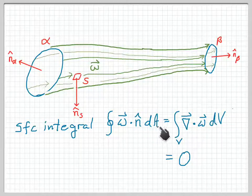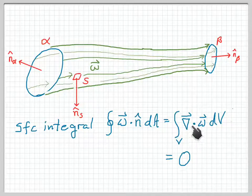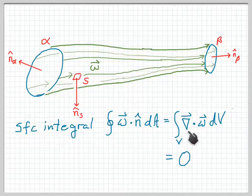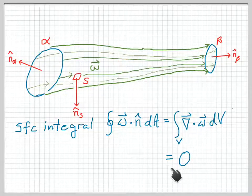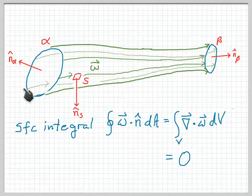By the divergence theorem, we can convert this closed surface integral into a volume integral over the whole volume of the vortex tube of the divergence of the vorticity. The divergence of the vorticity is identically zero, and therefore this integral has to be zero. So when we integrate the normal component of vorticity over the whole surface area of a chunk of vortex tube, it must come out to be zero.